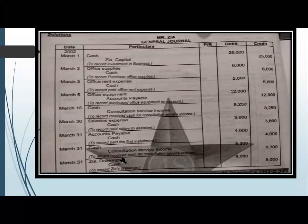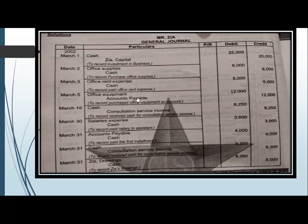We have done the T-account for service income. On March 16, the amount is 8,250 — you can see it here — and then on March 31st the amount is 9,300. The total on the credited side is 17,550. Then on the T-account you have to do the balance brought down of the same revenue, because the balance will come on the debited side.